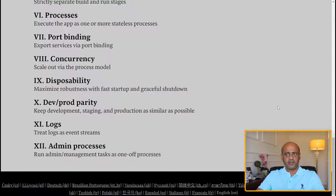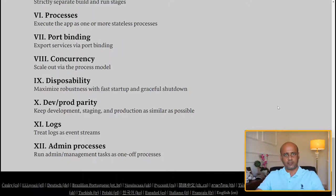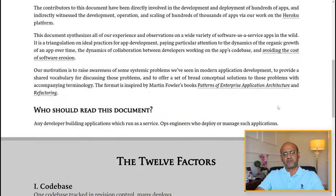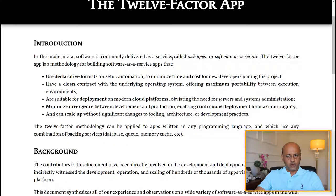Factor eleven is logs: treat logs as event streams. In my experience, people only look at logs when there's a bug or a problem. You want to tie logs with each event — for example, if you're working with CloudWatch or CloudTrail within AWS, tie logs with each event that occurs so it's much easier to isolate and identify a potential problem. Factor twelve is admin processes: run admin and management tasks as one-off processes. Those are the 12 factors.